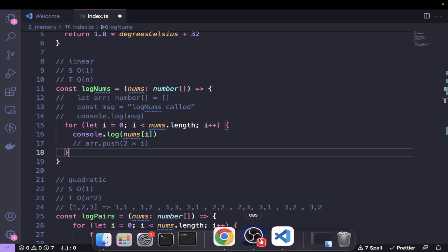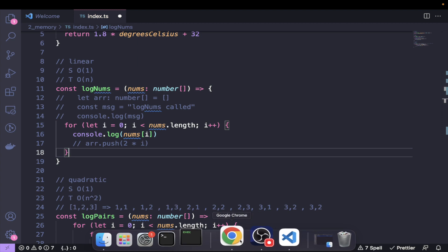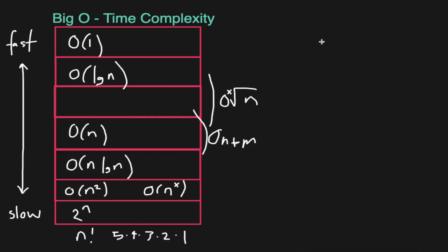O(n + m) is obviously going to be worse than O(n), but it's better than any of the exponentials or anything like that. Returning to our time complexity overview — not all algorithms have just one time complexity.